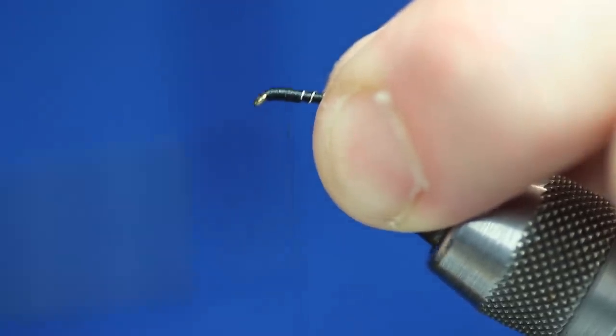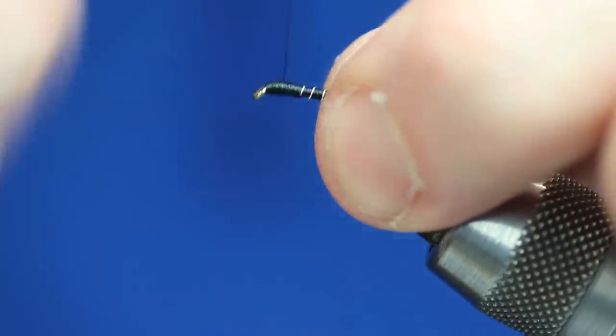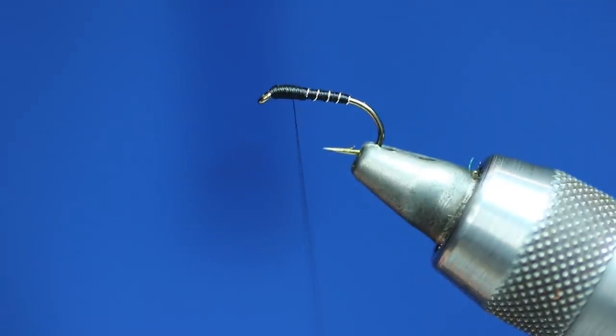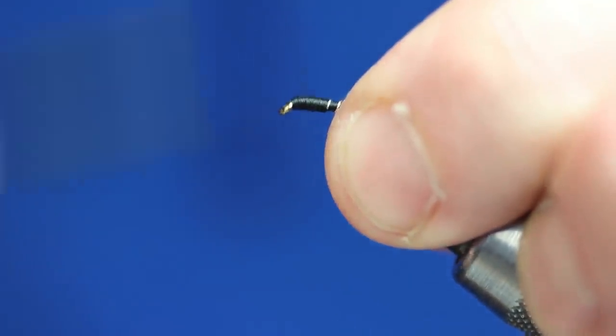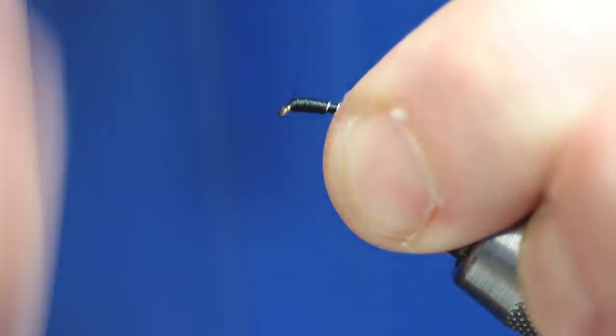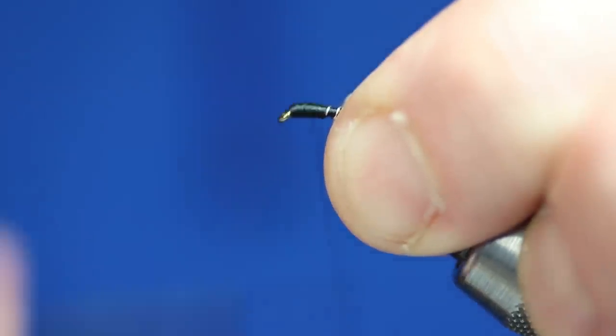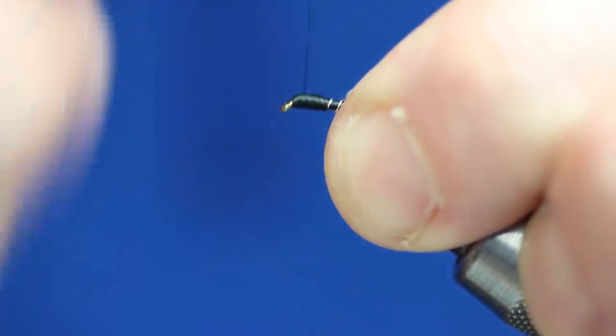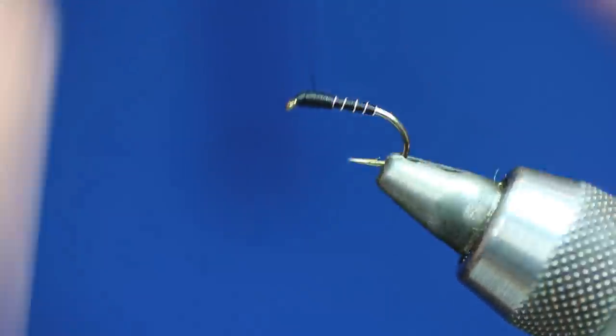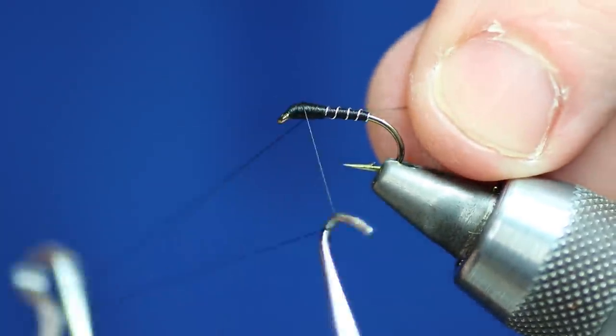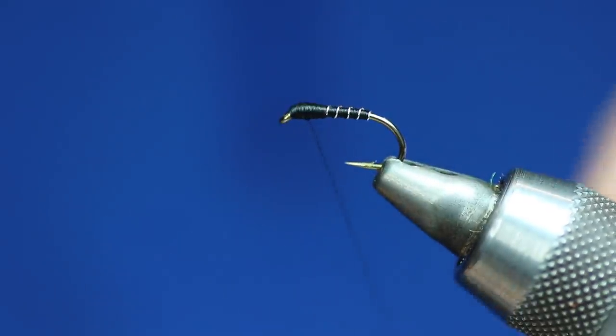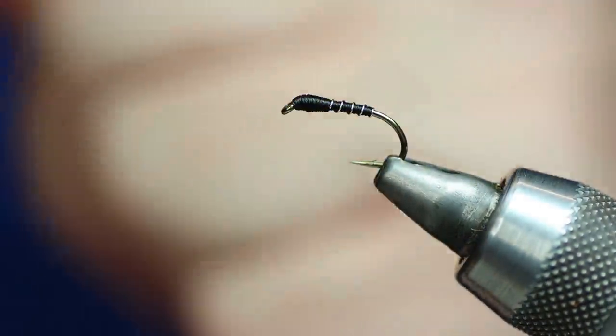So obviously we're building up the shape of the head. Now really this is such an easy fly to tie. You could tie a pile of these and just leave them. So that's it. We're going to whip finish it. Then we're going to finish it with the resins and the varnishes. Trim that off.